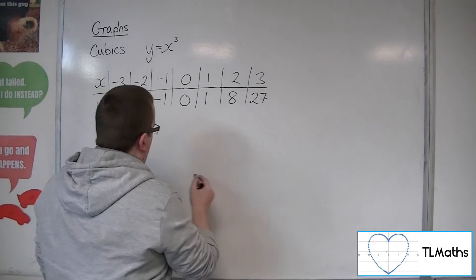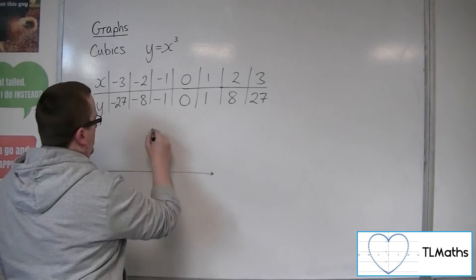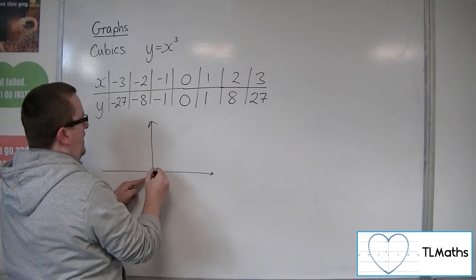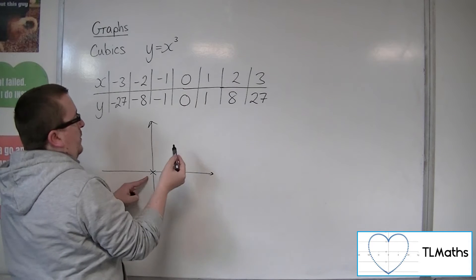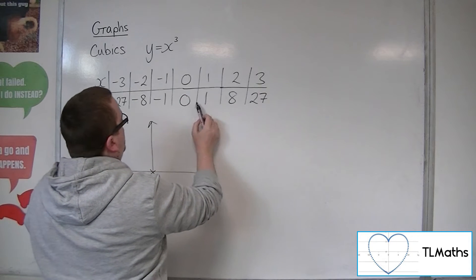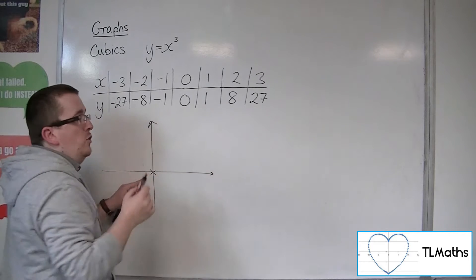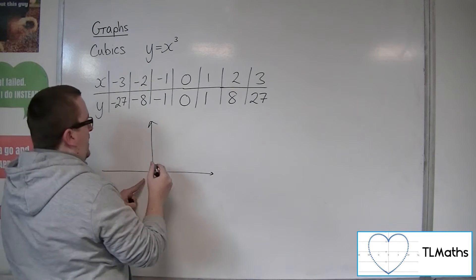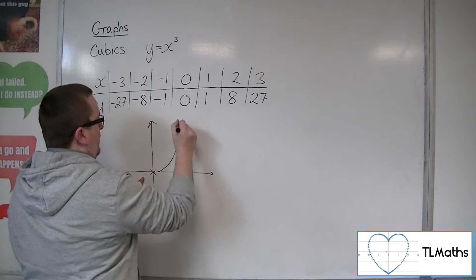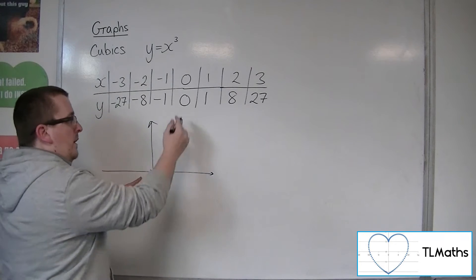So we can see that as x increases away from 0, it definitely goes through 0, because we've got the 0, 0. As x is increasing, y is also increasing, but it increases very quickly. So we go through 1, 1, 2, 8, 3, 27, and so it increases very quickly up like that.